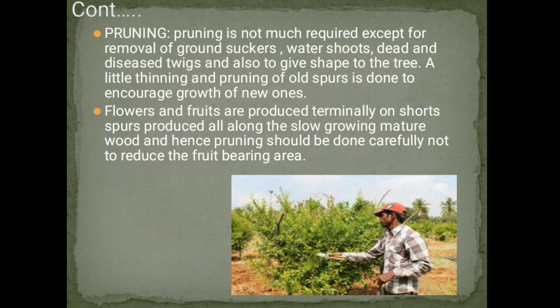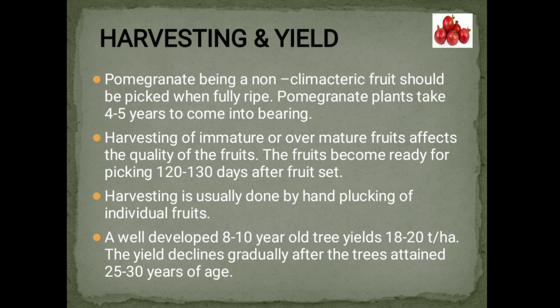Harvesting and Yield. Pomegranate, being a non-climacteric fruit, should be picked when fully ripe. Pomegranate plants take 4–5 years to come into bearing. Harvesting of immature or over-mature fruit affects fruit quality. Fruits become ready for picking 120–130 days after fruit set. Harvesting is usually done by hand plucking of individual fruits. A well-developed 8–10 year old tree yields 18–20 tonnes per hectare. Yield declines gradually after the trees attain 25–30 years of age.